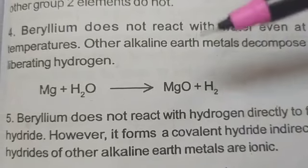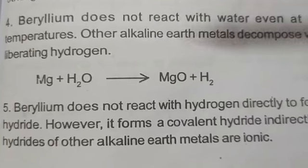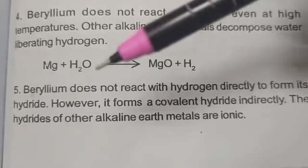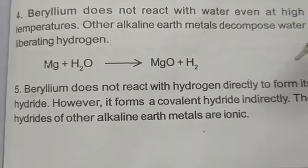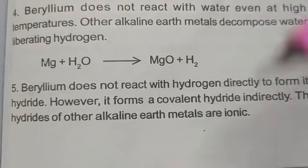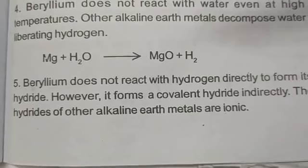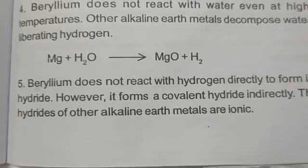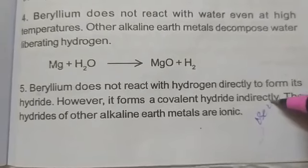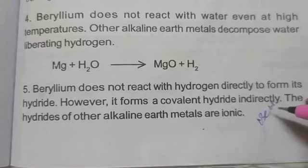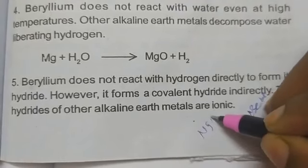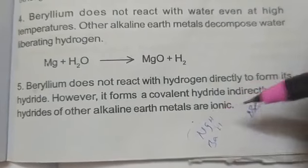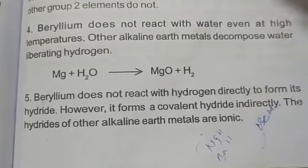These are differences between beryllium and other alkaline earth metals. Next, formation of hydride: beryllium does not react with hydrogen directly to form hydride. If beryllium does form a hydride, it forms a covalent hydride. But all other hydrides in Group 2, such as magnesium hydride and barium hydride, are ionic hydrides. These are the differences between beryllium and other alkaline earth metals.